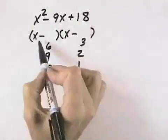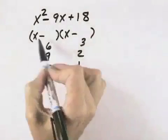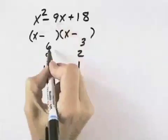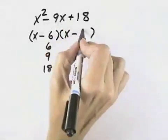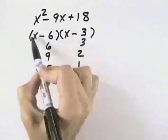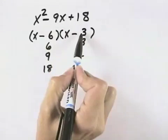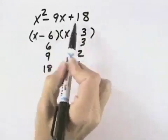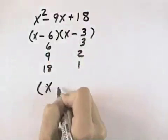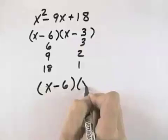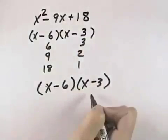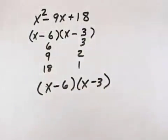But what we also want to note is the two negative signs, which means the inner and outer terms have to combine to be negative 9. So it looks like 6 and 3 will be our best choice, because negative 6x is our inner term and negative 3x is our outer term. Negative 6x plus negative 3x does give us negative 9x. So x minus 6 times x minus 3 would be the correct factored form of this particular trinomial.